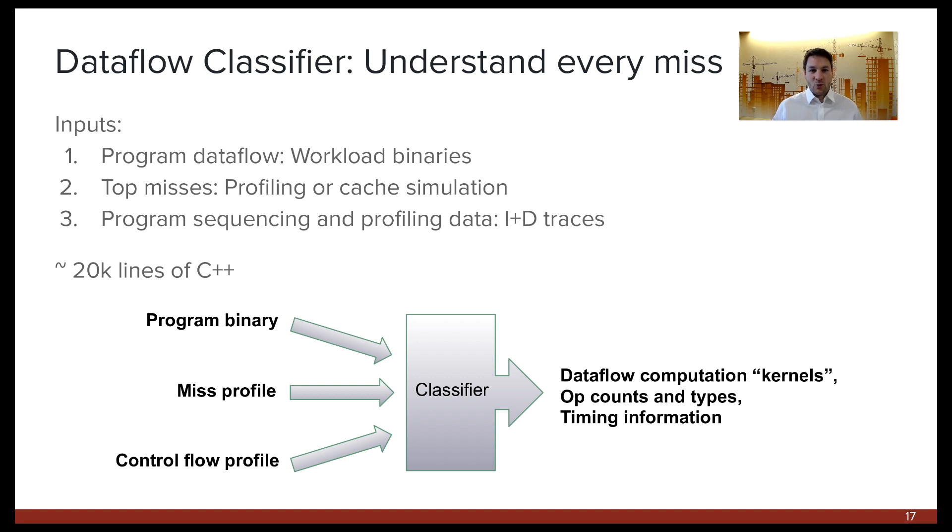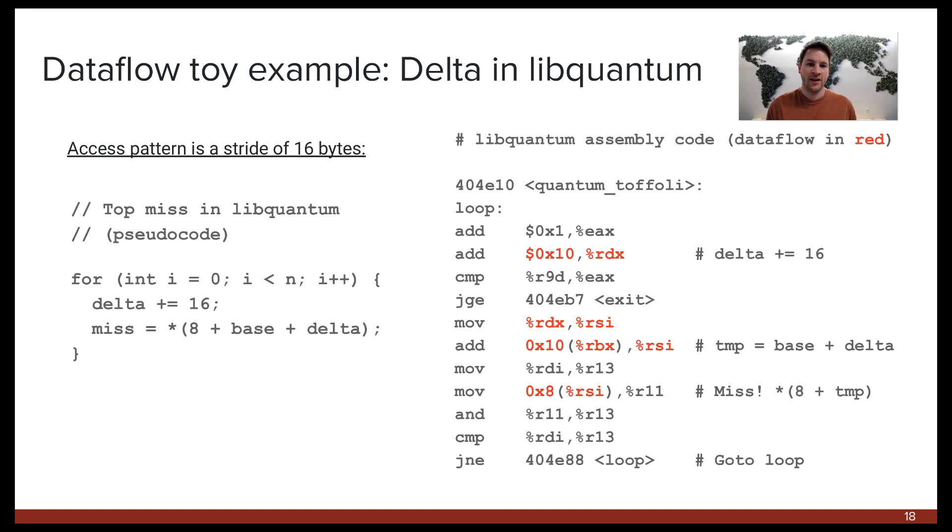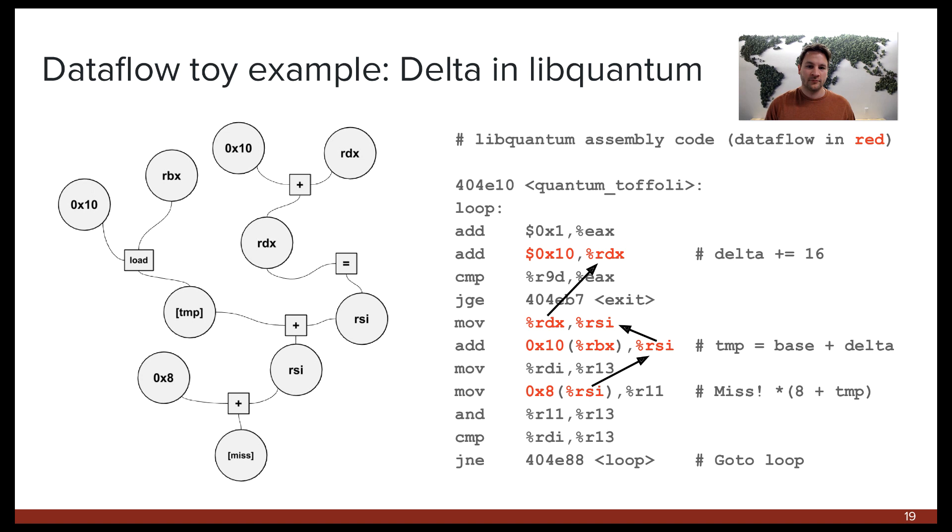So, let's take a look at why graph reduction is so important, with a small example. Here, we're looking at a hot section of LibQuantum, which is part of the SpecCPU 2006 benchmark suite. LibQuantum has a very simple stride access pattern, where it runs through a loop incrementing a load address each time by 16 bytes. The x86 instructions representing this loop are on the right hand side. By following the data dependencies, starting with the load near the bottom of the code, we can build the data flow graph shown at the left. But, it's a bit surprising, since this looks really complicated for just adding 16 to an address. In particular, we have three additions and an extra load operation.